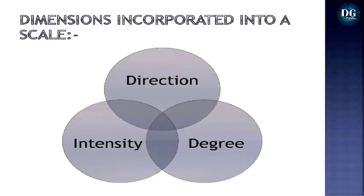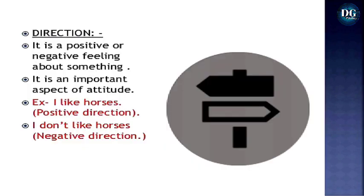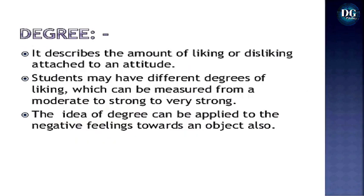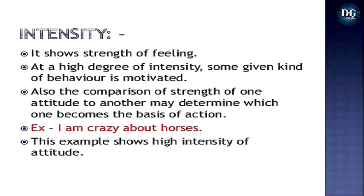Dimensions incorporated into a scale: first is direction, second is intensity, and third is degree. Direction refers to a positive or negative feeling about something — for example, 'I like horses' is positive direction and 'I do not like horses' is negative direction. Degree describes the amount of liking or disliking attached to an attitude; students may have different degrees ranging from moderate to strong to very strong. Intensity shows the strength of feeling — at a high degree of intensity, some kind of behavior is motivated.